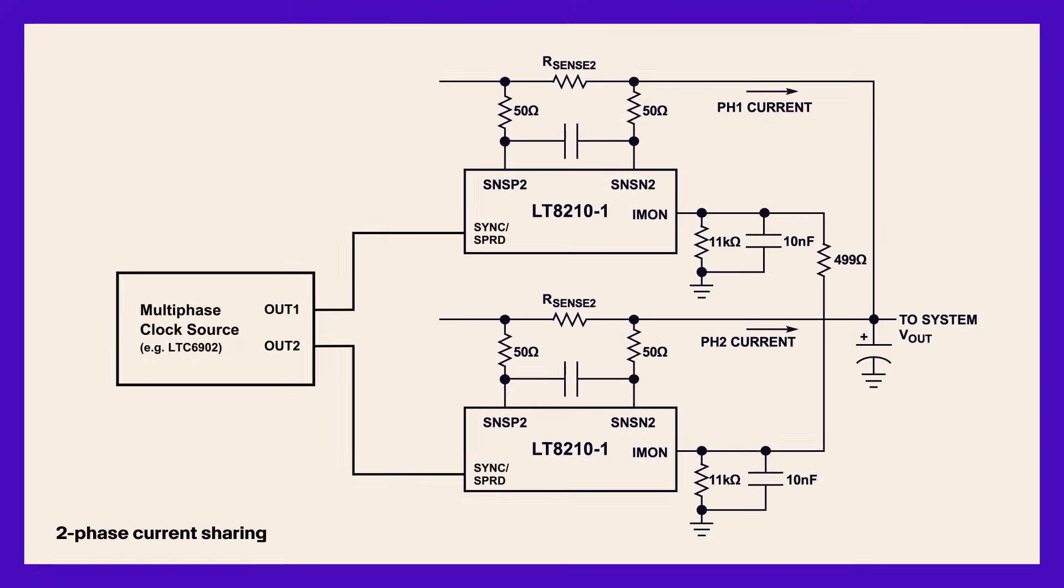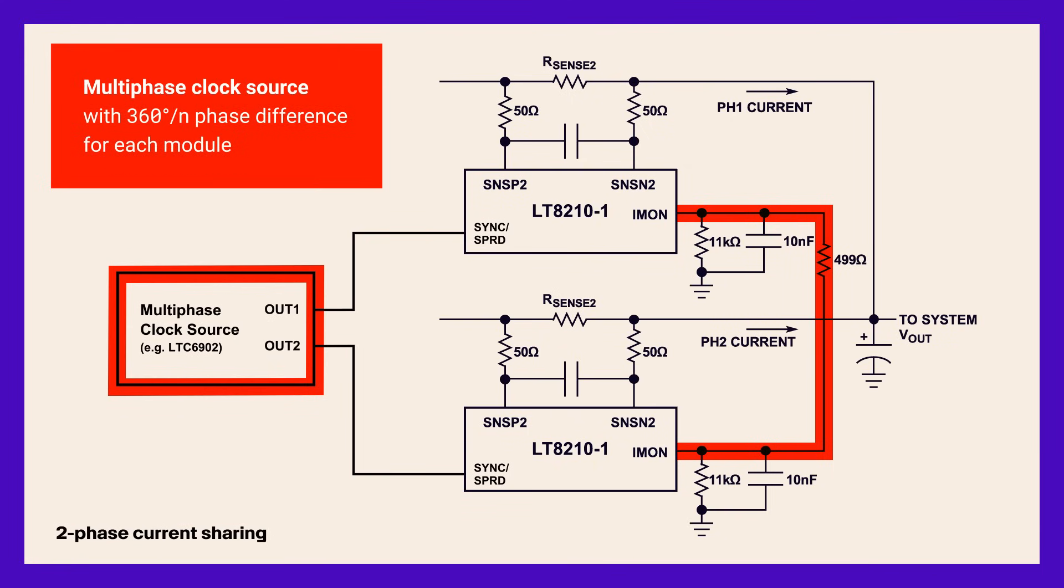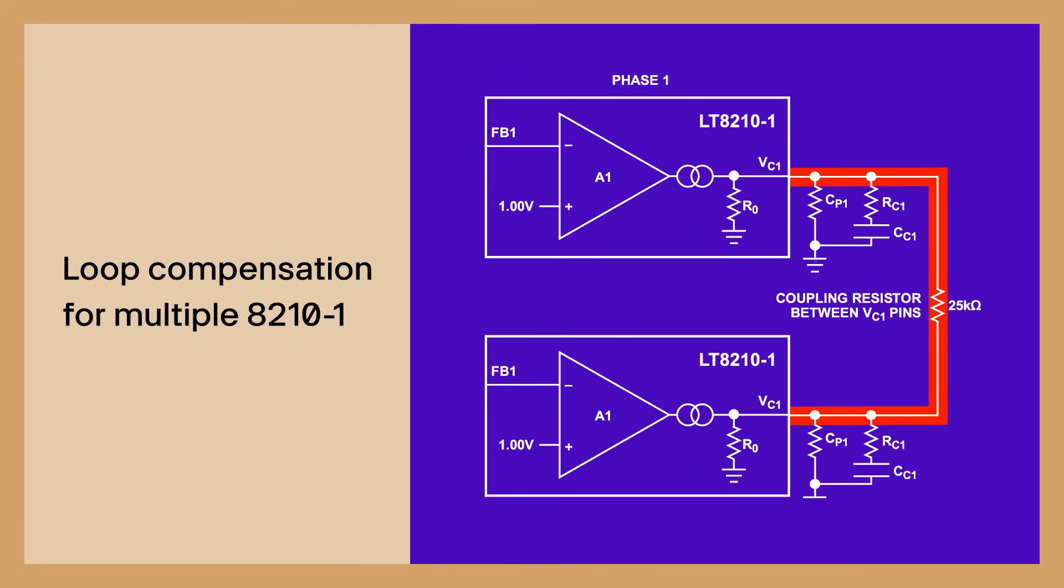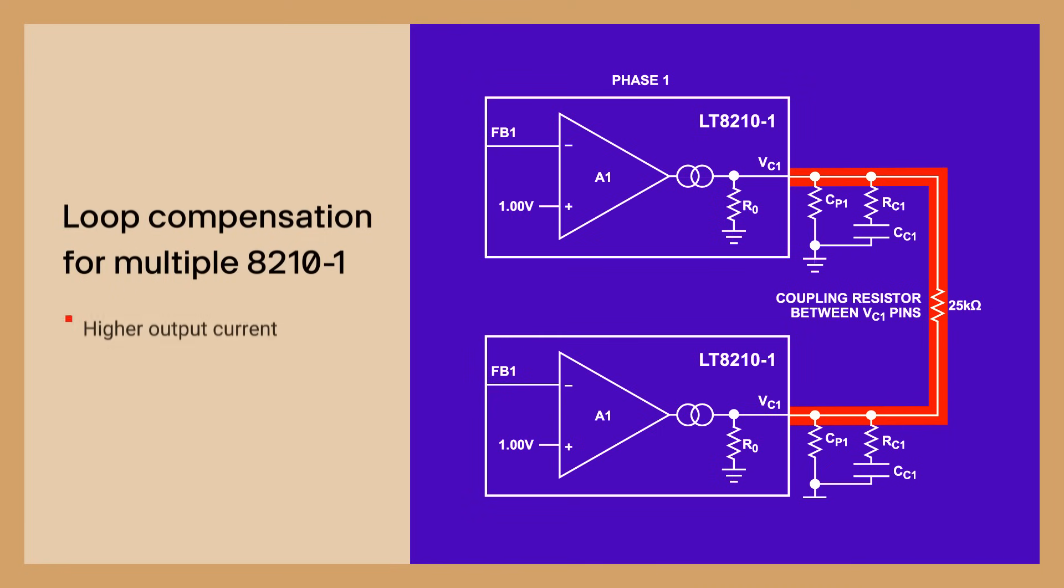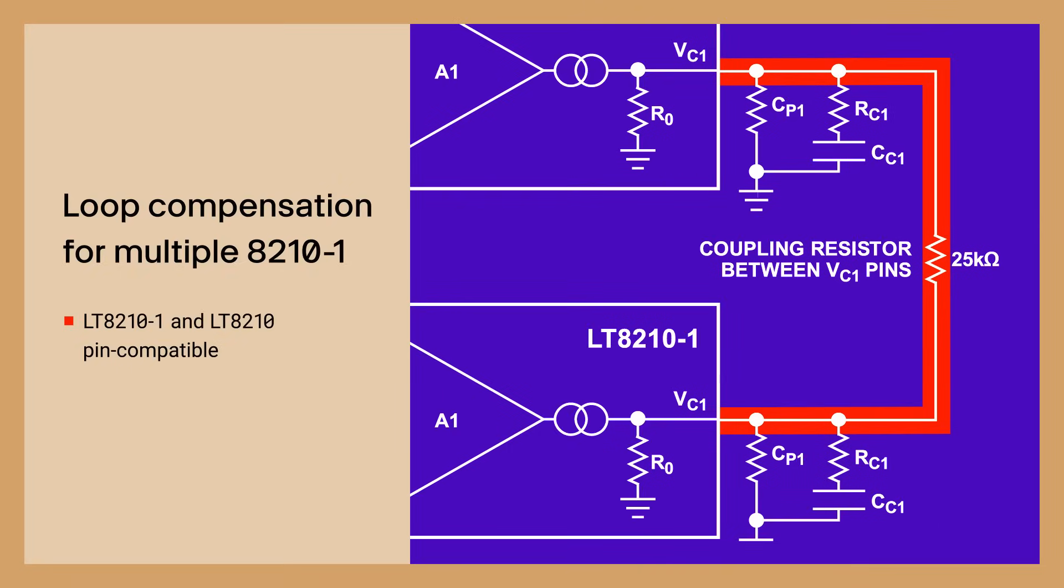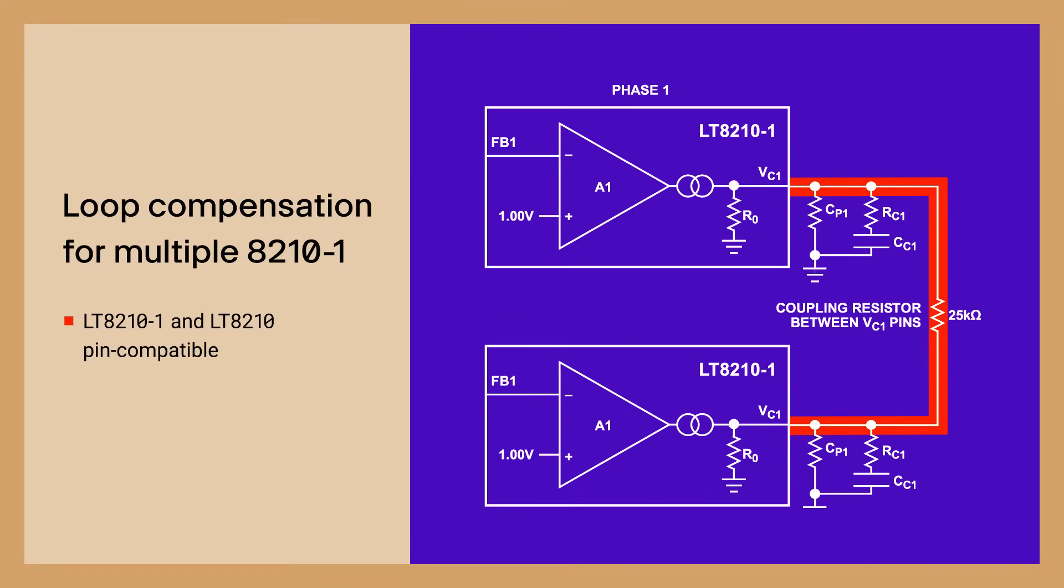The LT8210-1 offers built-in multi-phase masterless current sharing. This is accomplished by connecting the IMON pins of each controller to create an average current measurement and using a multi-phase oscillator to generate clock signals with the appropriate phase difference connected to the sync input of each controller. The error amplifier outputs are coupled and the LT8210-1 then uses a closed loop regulation scheme to balance the currents of multiple phases providing higher output current and reduced voltage ripple. This multi-phase current sharing is what differentiates the LT8210-1 from the LT8210, but they are otherwise pin compatible, making it easy to transition existing designs to the LT8210-1.